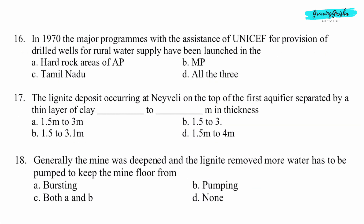Question 16. In 1970, the major programs with the assistance of UNICEF for provision of drilled wells for rural water supply have been launched in? Option D: All the three.